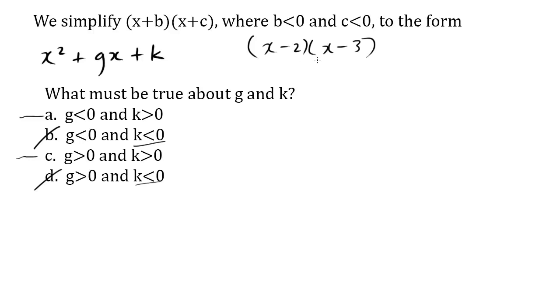Now because these numbers are negative, when we do FOIL, outside, inside, negative 3x minus 2x becomes more negative. It must be a negative number.